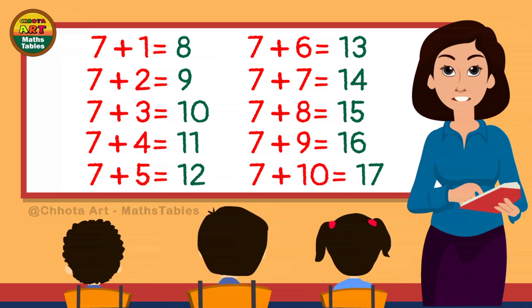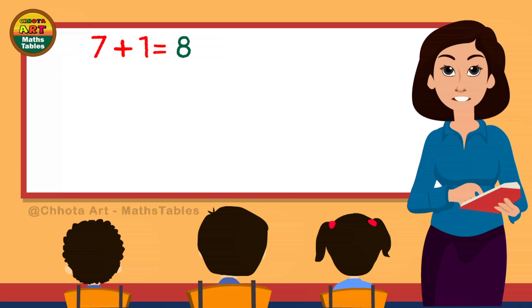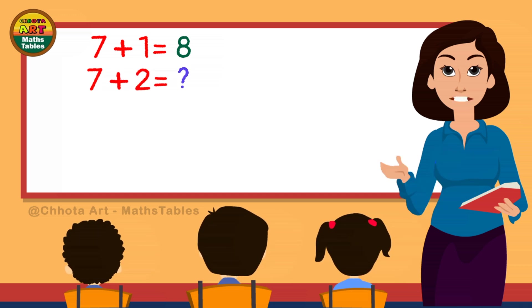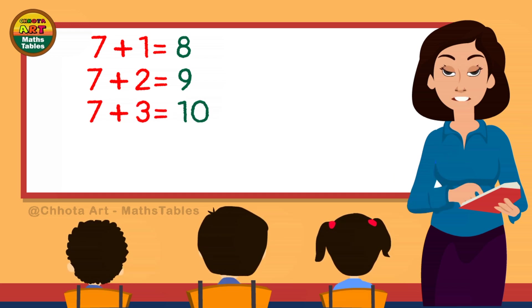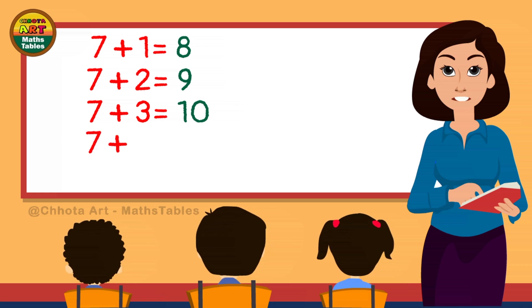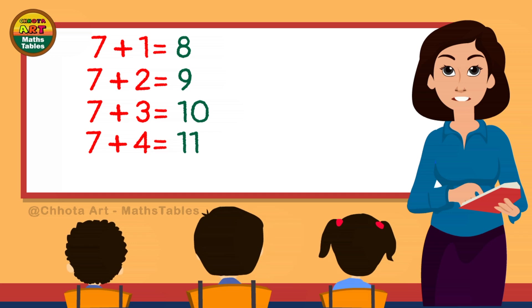7 plus 1 is 8. 7 plus 2 is 9. 7 plus 3 is 10. 7 plus 4 is 11.